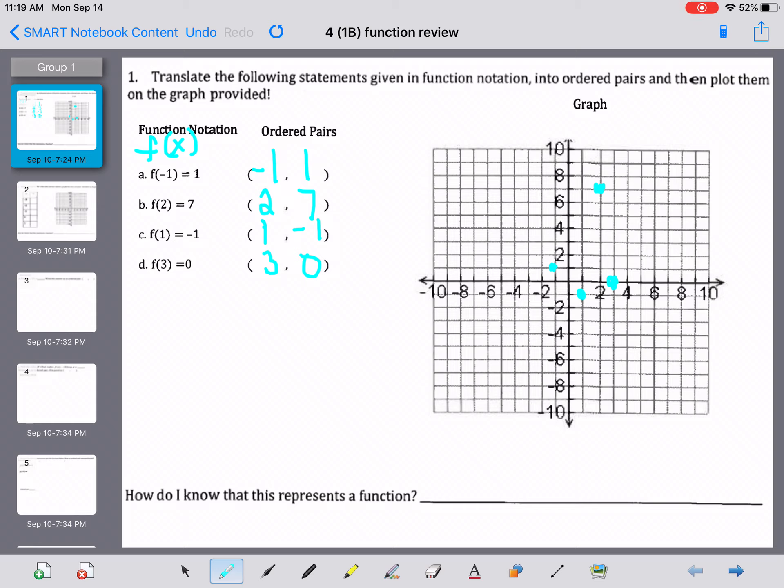And how do we know that this set of ordered pairs represents a function? Well, what we can say is that it passes the vertical line test, which I sometimes abbreviate as VLT for vertical line test.